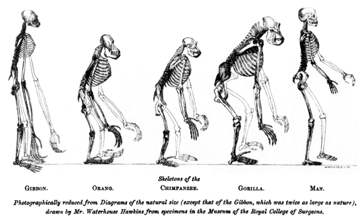Charles Darwin coined the term selective breeding. He was interested in the process as an illustration of his proposed wider process of natural selection. Darwin noted that many domesticated animals and plants had special properties that were developed by intentional animal and plant breeding from individuals that showed desirable characteristics, and discouraging the breeding of individuals with less desirable characteristics. Darwin used the term artificial selection twice in the 1859 first edition of his work On the Origin of Species, in Chapter Four, Natural Selection, and in Chapter Six, Difficulties on Theory.